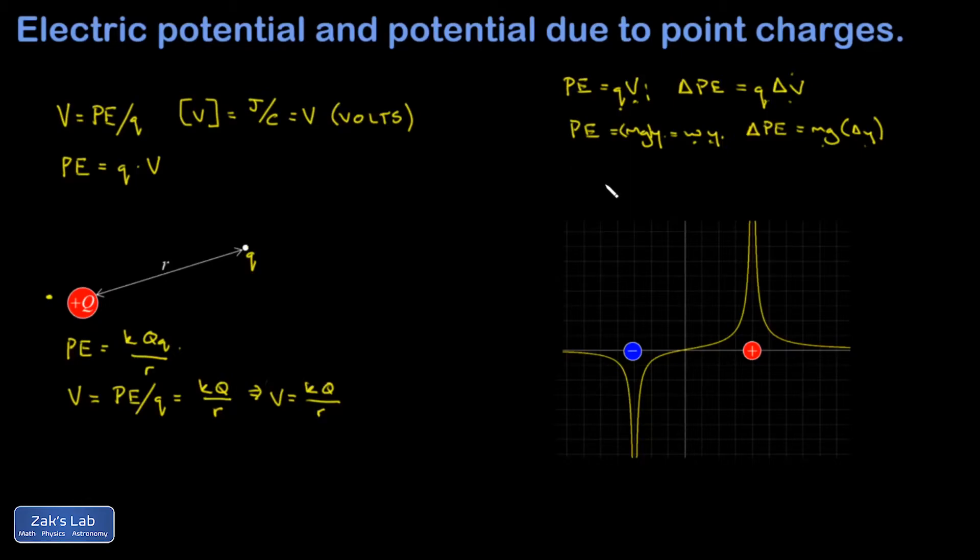So thinking of electric potential as height, it builds up what I refer to as the electrostatic landscape. And that's what's in this picture on the bottom right. Near a negative charge, I have negative potential.